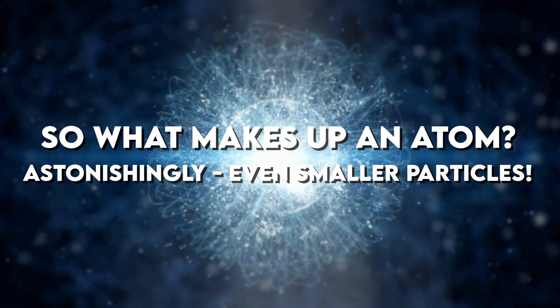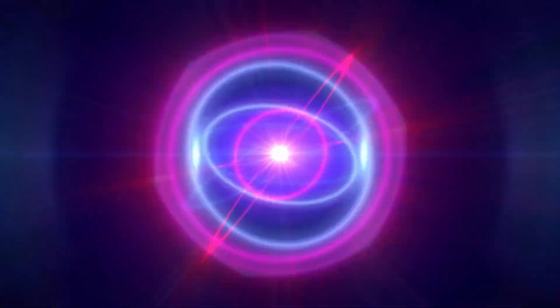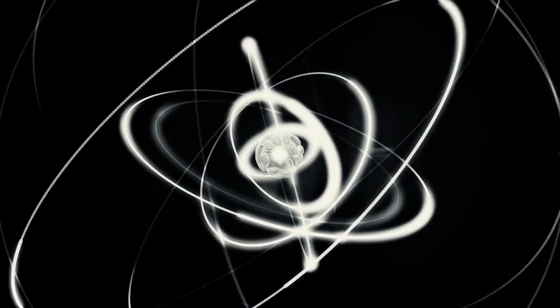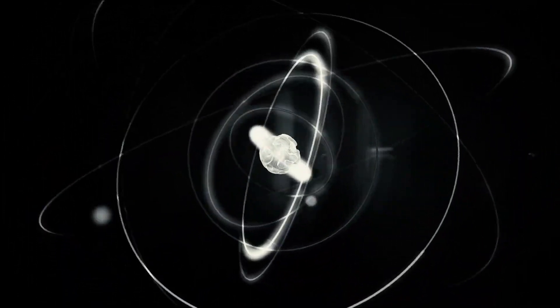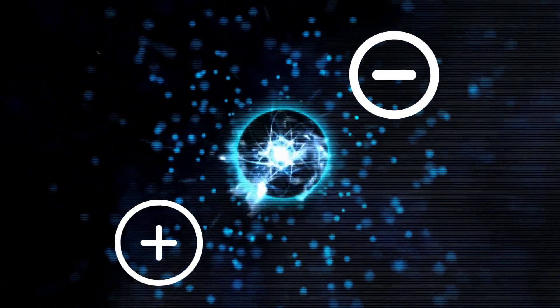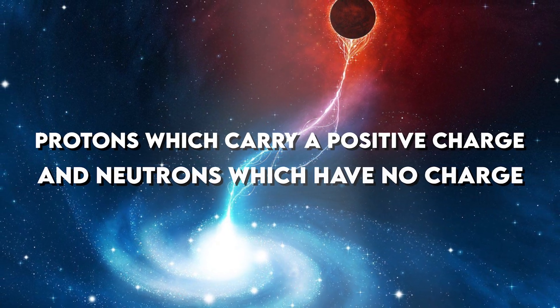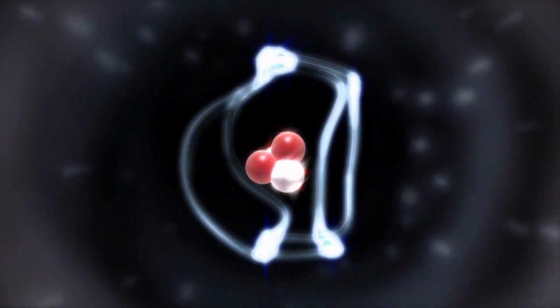So, what makes up an atom? Astonishingly, even smaller particles. At the very center, we have the nucleus. This is the heart of the atom, like the atomic downtown. The nucleus contains two types of particles: protons which carry a positive charge, and neutrons which have no charge and so are neutral.